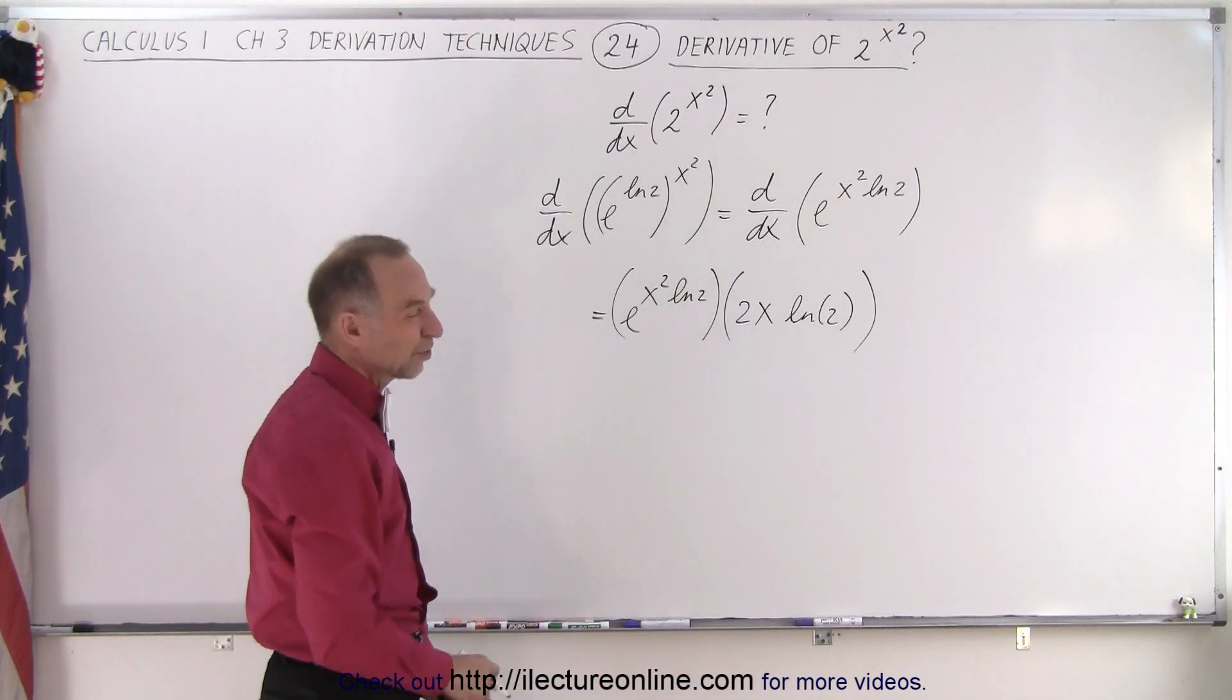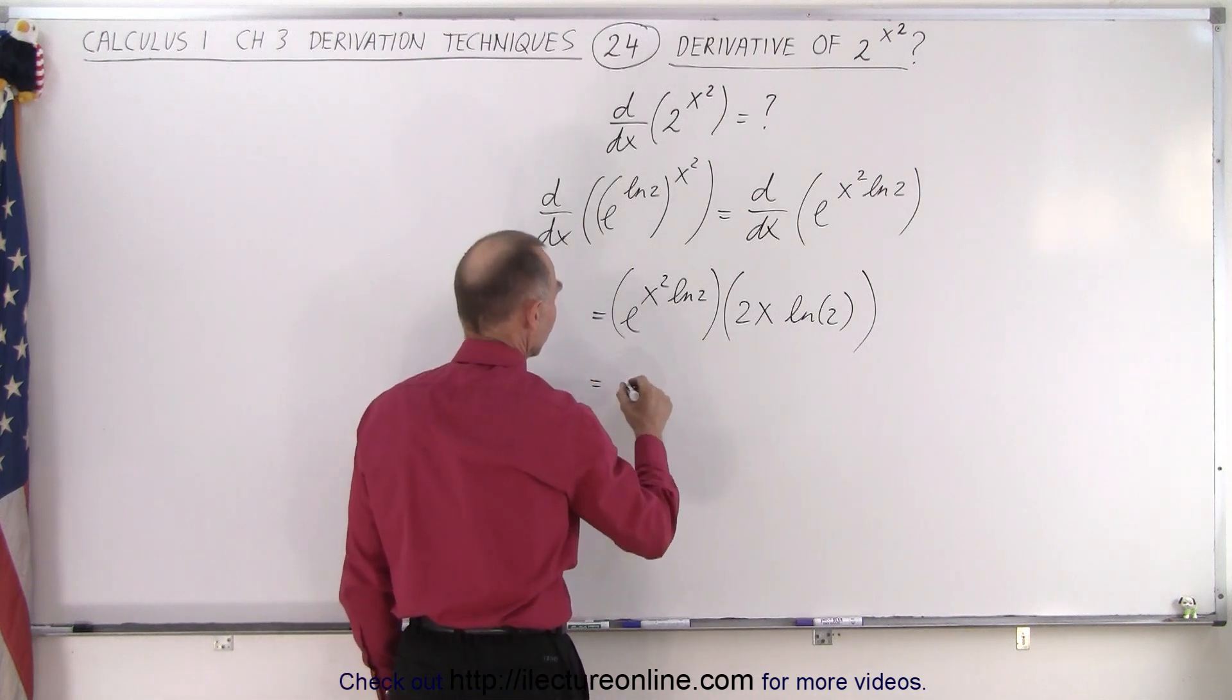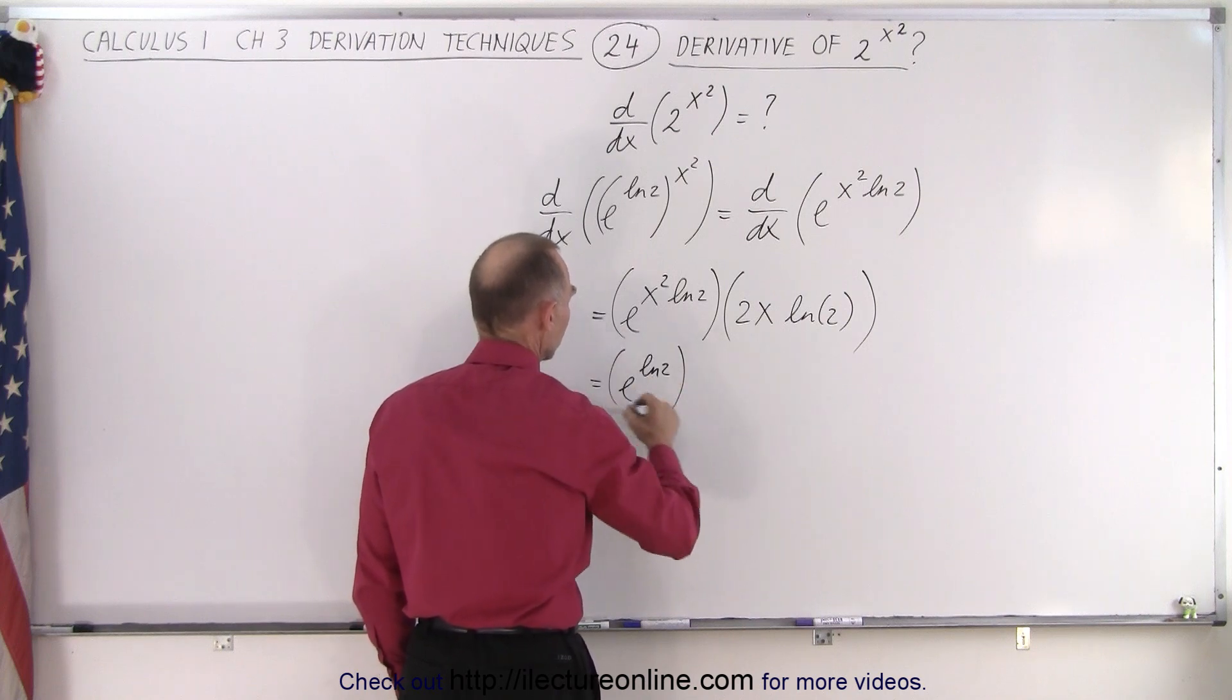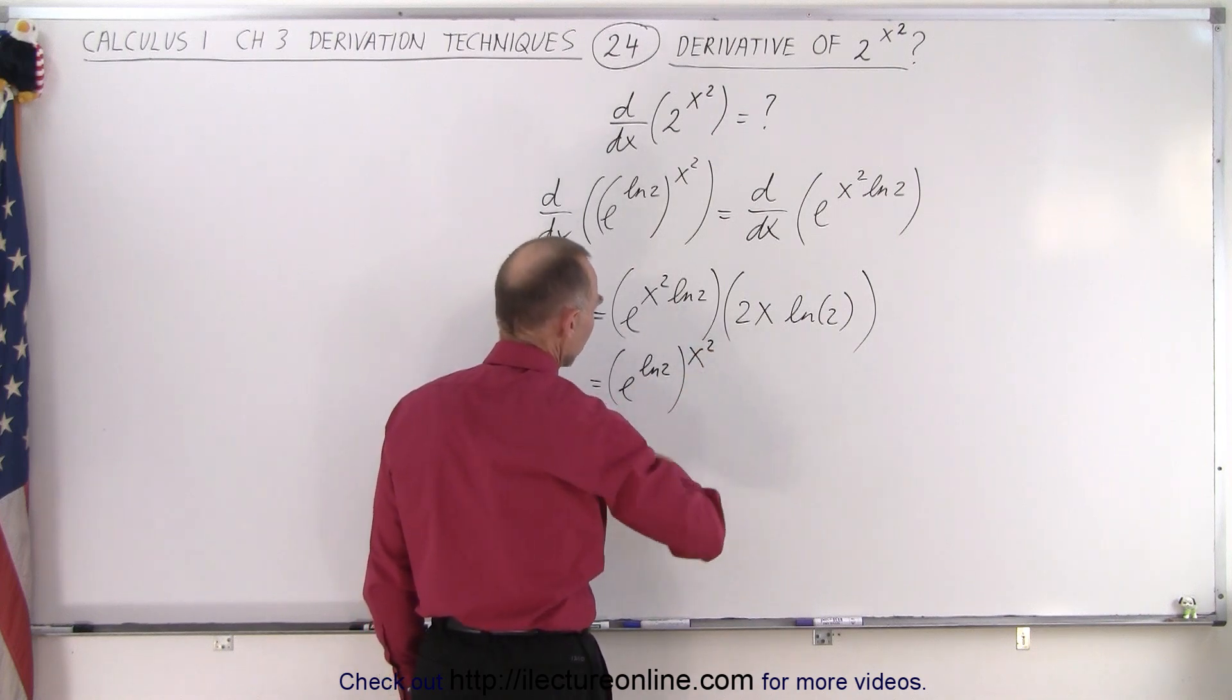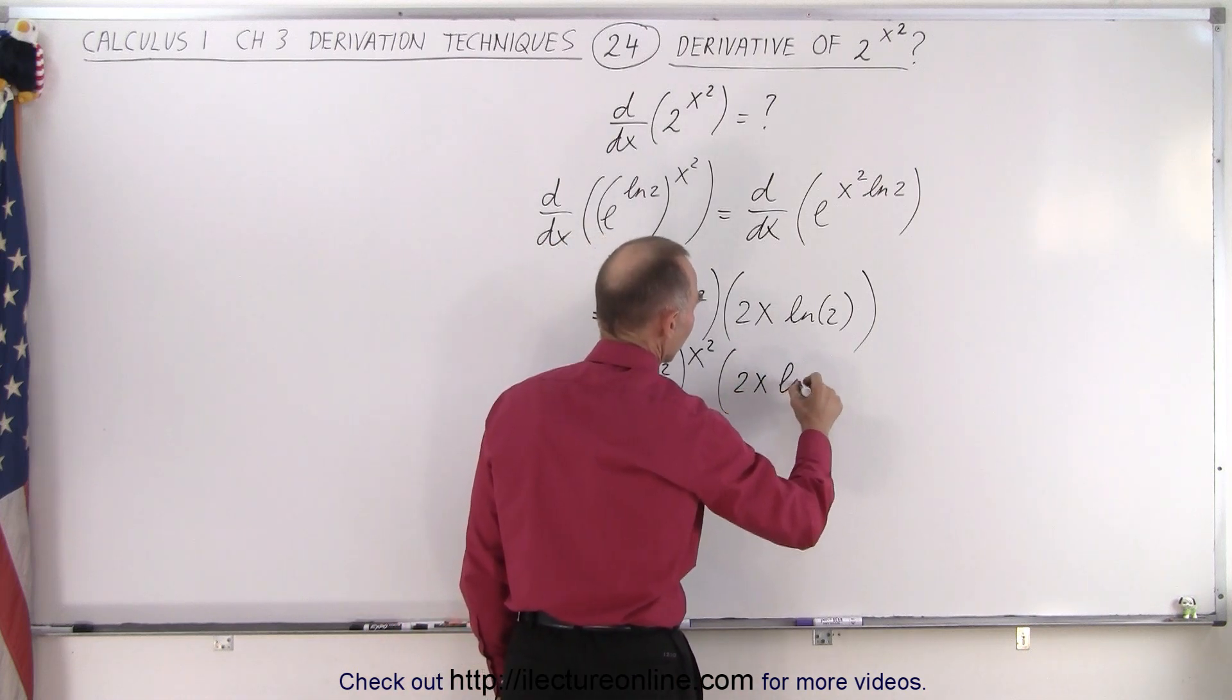To simplify and get it back to the original form, we're going to rewrite this. This equals e raised to the natural log of 2, to the x squared power—now we go backwards—times 2x times the natural log of 2.